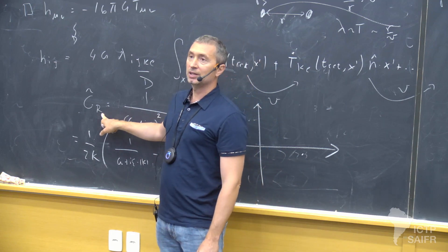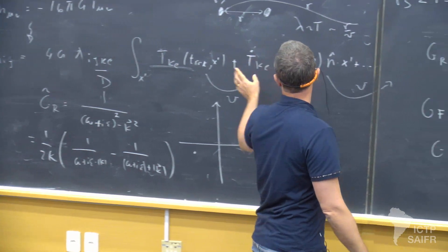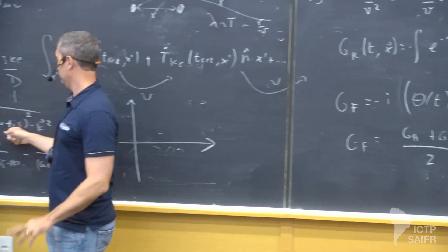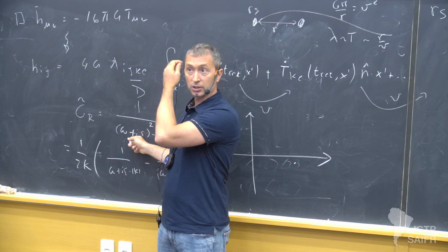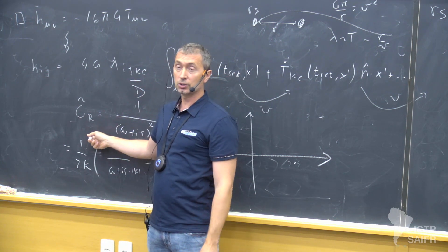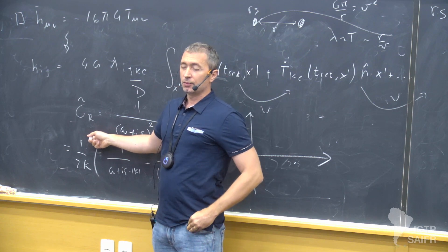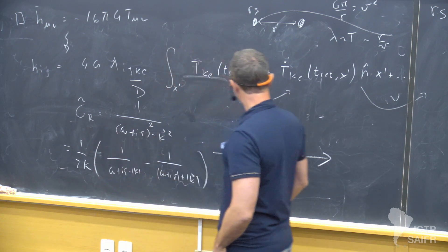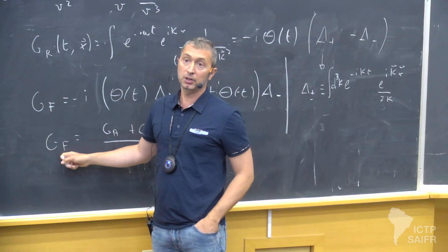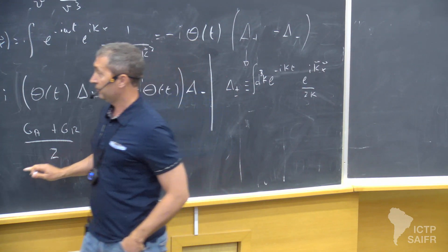And indeed that's what we used here — it was a real function. The advanced Green function is the same, because the Fourier transform is just the complex conjugate of this. So the advanced Green function is also the Fourier transform of a real function. But if it was like this, then the Feynman would be also — but the Feynman is not, because we know that the Feynman has this representation in Fourier space.